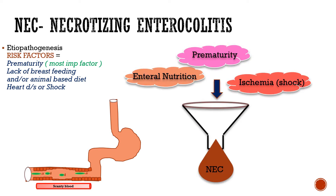Ischemia can be due to heart disease or any other problem leading to scarcity of blood to the gut mucosa. This scarcity causes lack of nutrition to the gut mucosa, which is still growing in an immature child. Due to scanty blood supply, the gut mucosa cannot regenerate, and hence damage cannot be healed. All three components — prematurity, ischemia, and enteral nutrition — funnel down to cause necrotizing enterocolitis.